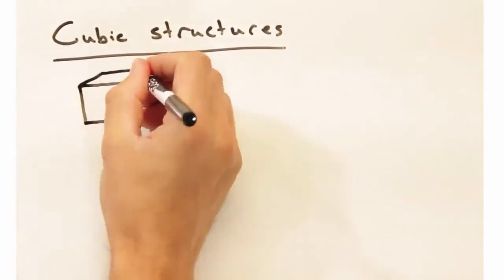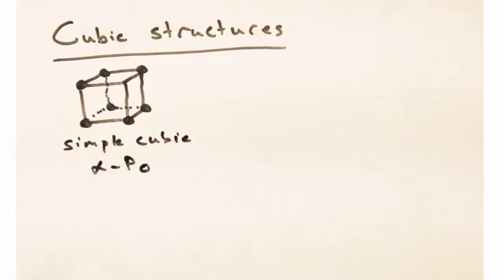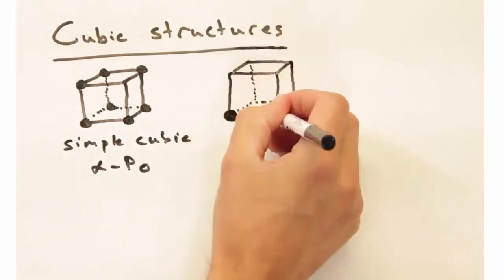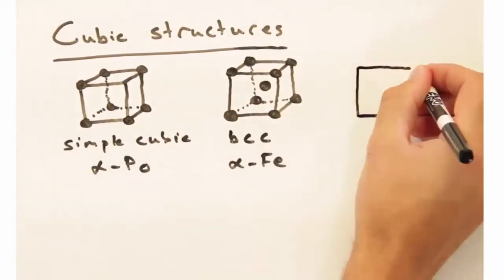Nicole, why don't you start us off with some cubic structures? Sure. First we have alpha polonium, which is simple cubic. Then we have alpha iron in the body-centered cubic structure, and finally copper in the face-centered cubic structure.